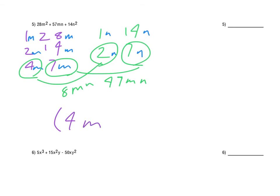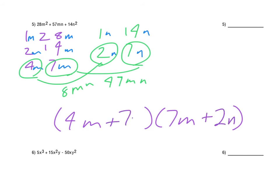The way this will look is 4m and 7m. The 4m multiplies the 2n, so if 4m is here, then 2n has to be over here, and then plus 7n only has one place to go. If you're ever not sure, box or foil that out to make sure you've got the right product.